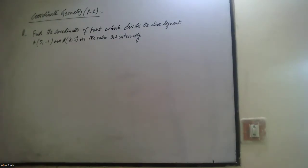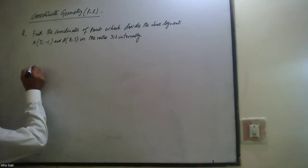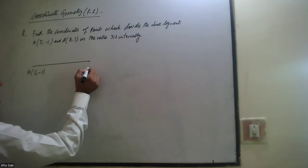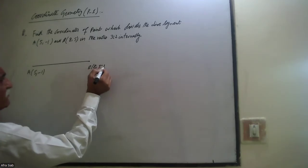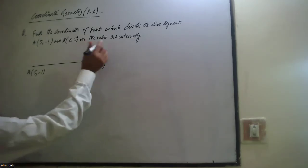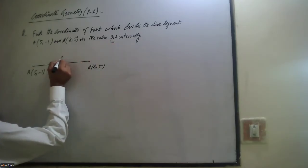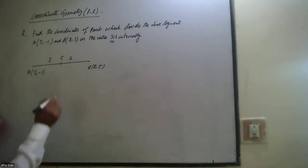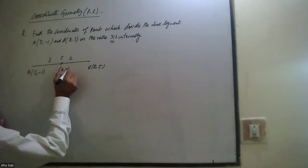This is the topic of coordinates. For P1, find the coordinates of the point which divides the line segment A(5, -1) and B(8, 5) in the ratio 3:2 internally. We have this line segment AB, where A has coordinates (5, -1) and B has coordinates (8, 5). Let's say point C divides it in the ratio 3:2 internally, and we need to find the coordinates of C, which are x and y.